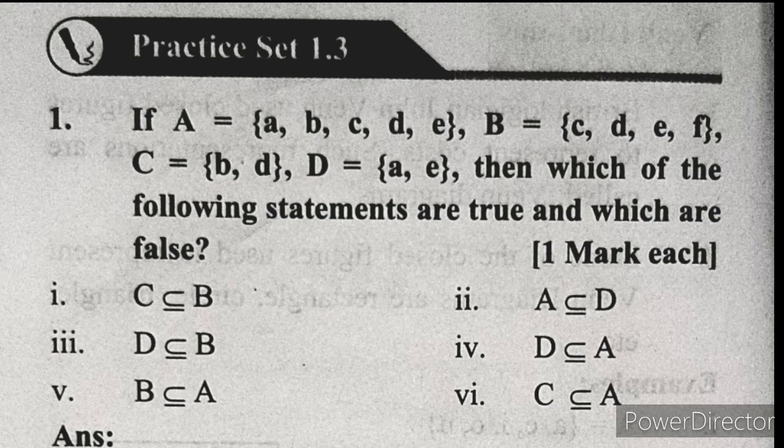The first question: Set A has elements A, B, C, D, E. Set B has elements C, D, E, F. Set C has elements B and D. Set D has elements A and E. These are the names of the sets and their elements. Then, which of the following statements are true and which are false?